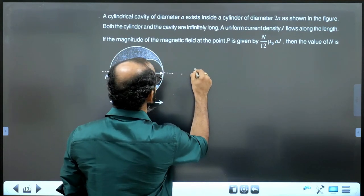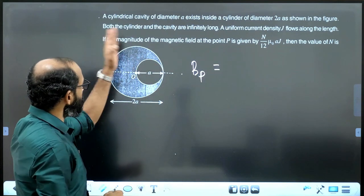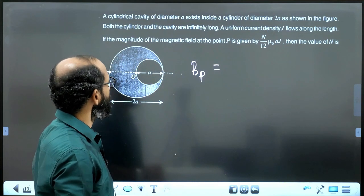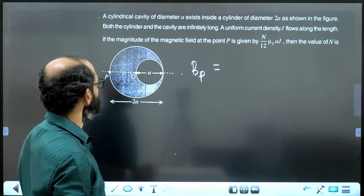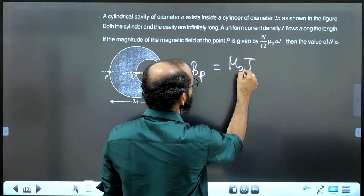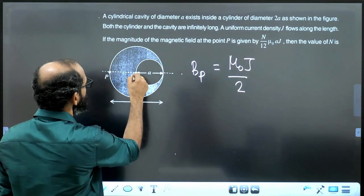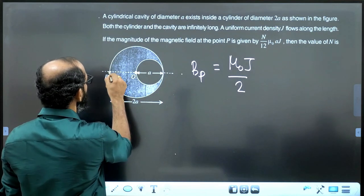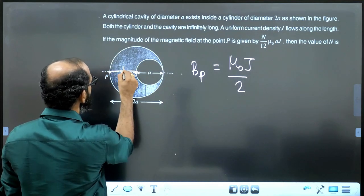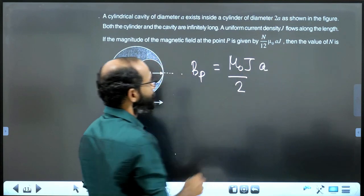The field due to the total uniform current carrying wire having radius A, diameter 2A, current density is a constant, is mu0J by 2 into radial distance. Here, radial distance is measured from center O to the point P and that distance is clearly shown A. So, R is equal to A, mu0JA by 2.